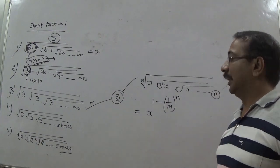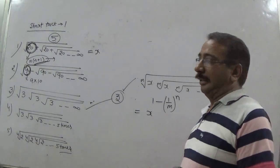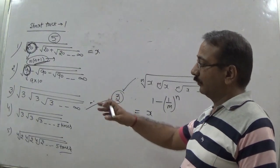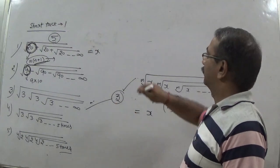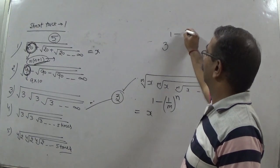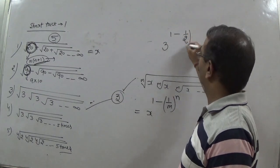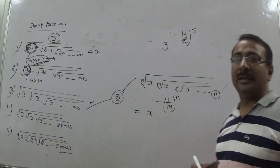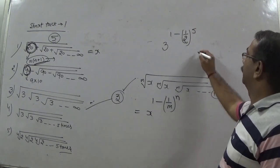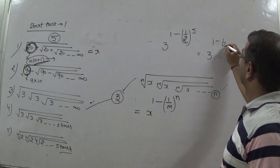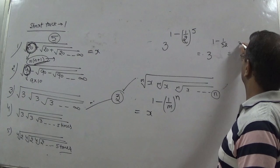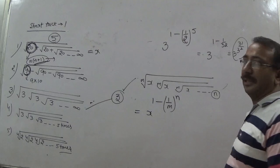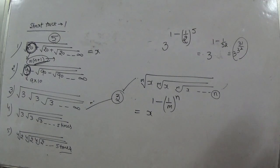Let us apply this to the fourth question. We are given cube root of 3, repeated 5 times. Using the formula: 3 raised to the power (1 − 1/2)^5. Now (1 − 1/2)^5 = (1/2)^5 = 1/32, so 1 − 1/32 = 31/32. Therefore the answer is 3 raised to the power 31/32.